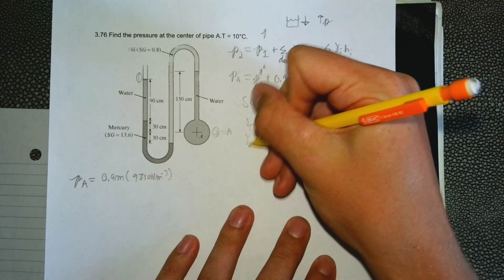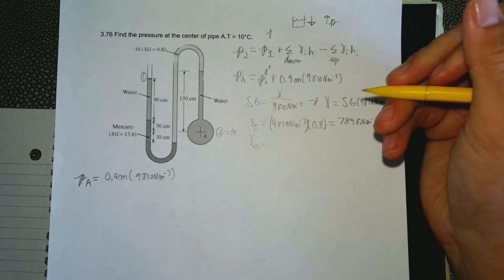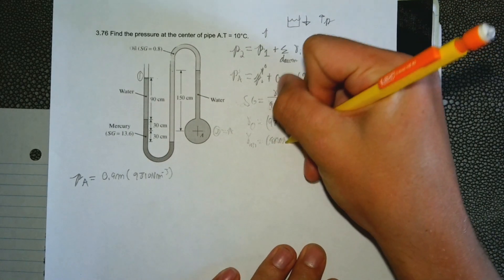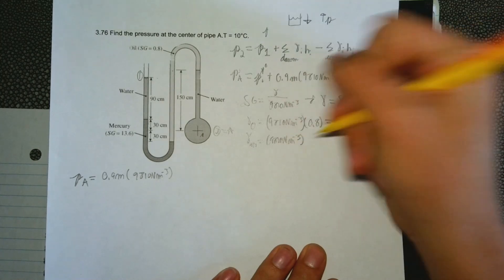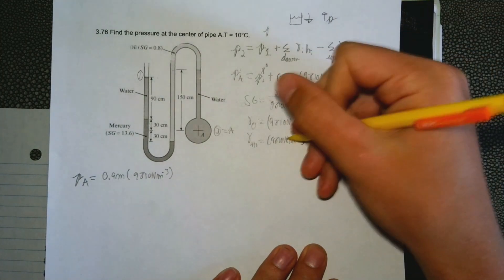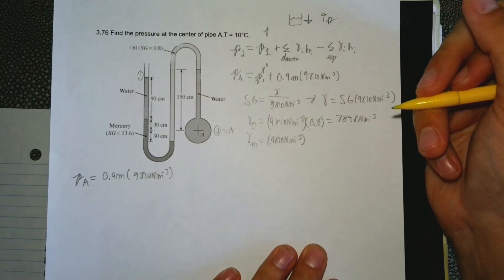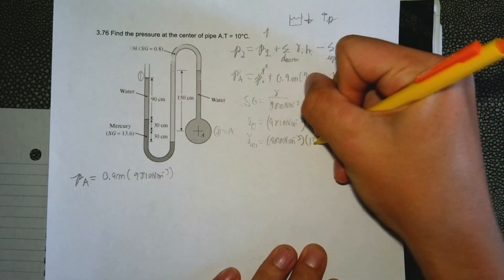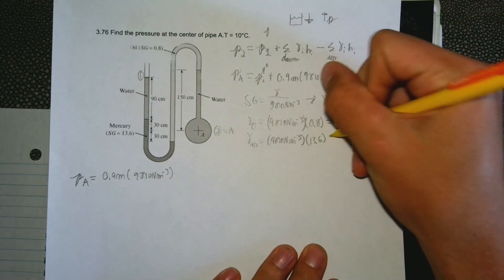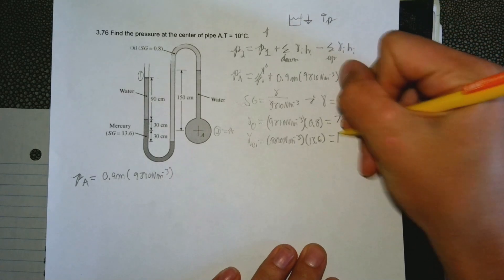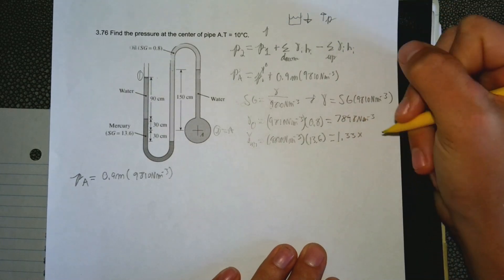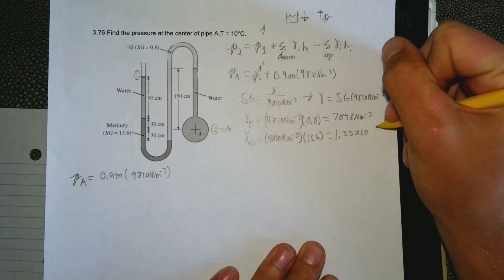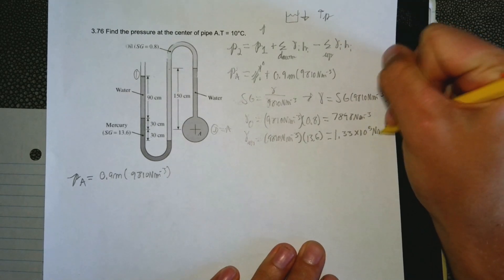Specific weight of mercury: again that water at temperature of 4 degrees Celsius, the specific weight of that is 9,810 Newtons per meter cubed. Multiply that by the specific gravity that's given, 13.6, and we get that that is about, rounding here a little bit, 1.33 times 10 to the fifth power Newtons per meter cubed.